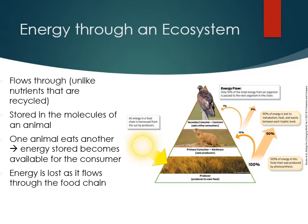Now let's talk about how energy flows through an ecosystem. Energy, unlike nutrients, flows through a system — meaning we're losing it as we move through an ecosystem. Nutrients, however, are recycled, cycling through different stages but pretty much always existing in the same overall amount. Energy, on the other hand, flows one way.